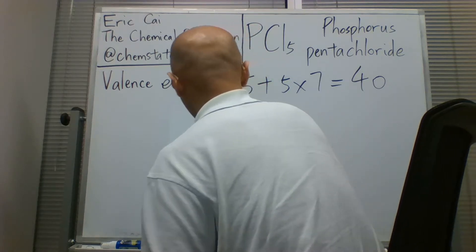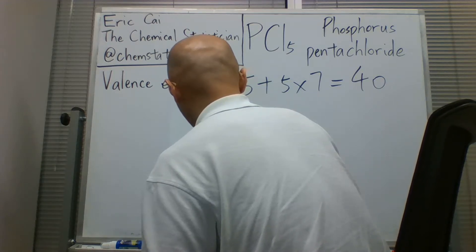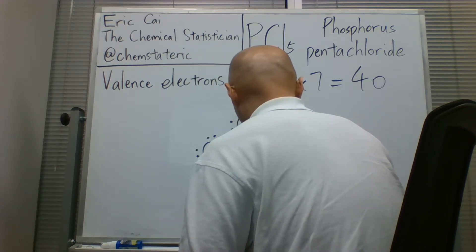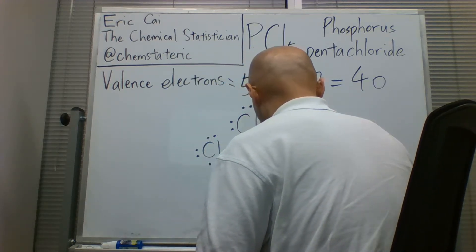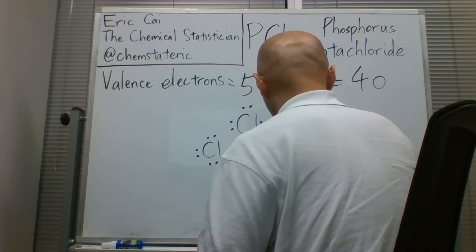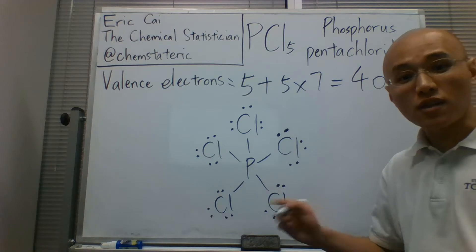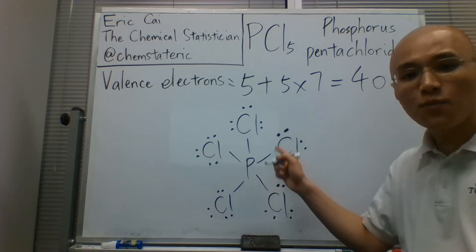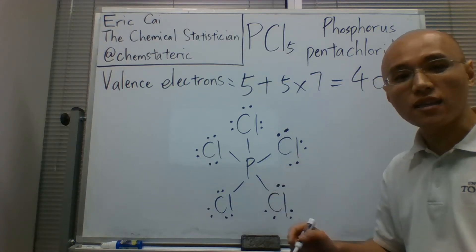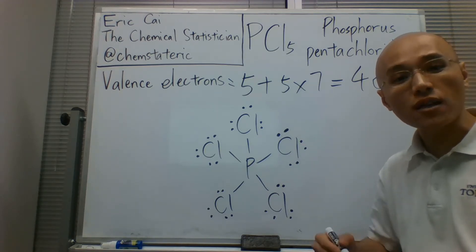Now you can clearly see that the phosphorus has more than eight electrons around it. This can exist because phosphorus has d orbitals, and that's where the extra electrons go.